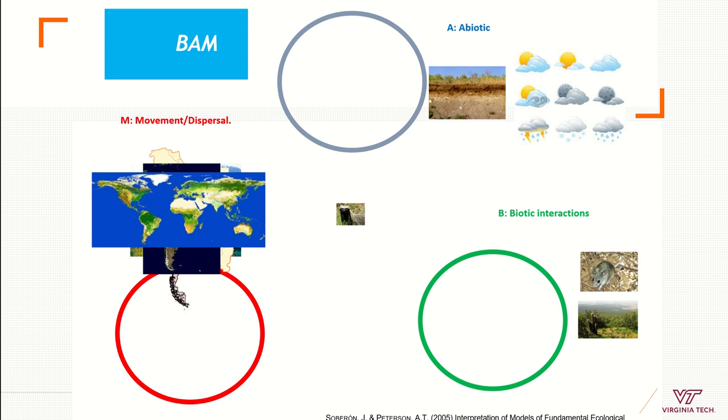The other one is abiotic, so all the climatic variables, all the soil variables, all the environmental variables that don't change if the species is there or not. For example, temperature—it doesn't matter if the species is there or not, temperature is going to be always the same.